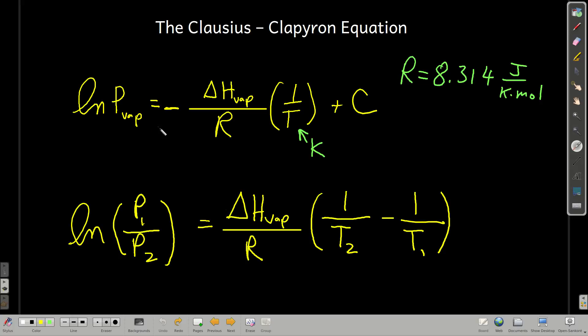So if we were to plot natural log of the vapor pressure of a liquid versus 1 over its temperature in kelvin and get the equation of the best fit straight line, the slope of that line would be equal to negative heat of vaporization over R. Remember, ΔHvap is just the change in enthalpy for the process of going from a liquid to a gas.